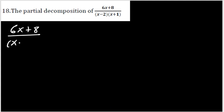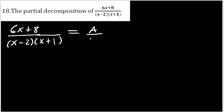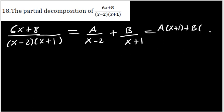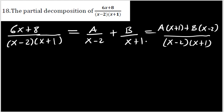The next question asks us to decompose the rational function (6x+8) / ((x-2)(x+1)). The denominator is already factorized. The degree of the numerator is 1 and the denominator's degree is 2, so the numerator's degree is less — everything is fine, we can proceed. We write this as A/(x-2) plus B/(x+1), which by cross-multiplication equals [A(x+1) + B(x-2)] / [(x-2)(x+1)].